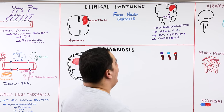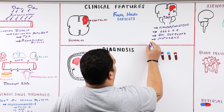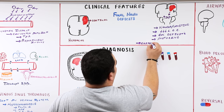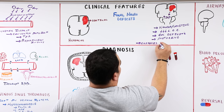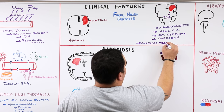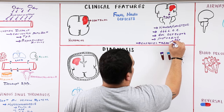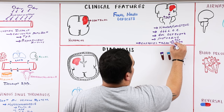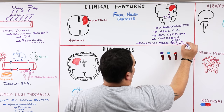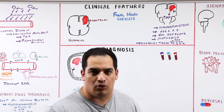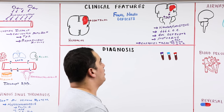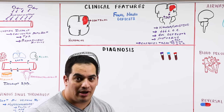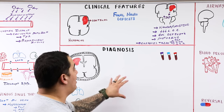The Cushing's triad — high blood pressure, low heart rate, and low or irregular respiratory rate — is another important sign of elevated intracranial pressure.